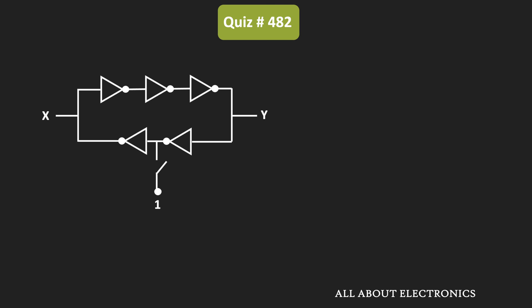The switch was momentarily closed and then opened again. Whenever the switch is closed, a logic 1 input appears, and because of that, the output of the first NOT gate will become 0. After the switch is opened, this output will remain 0, and the same will appear at the X node. So the X output is equal to 0.